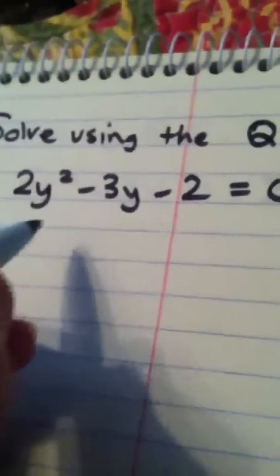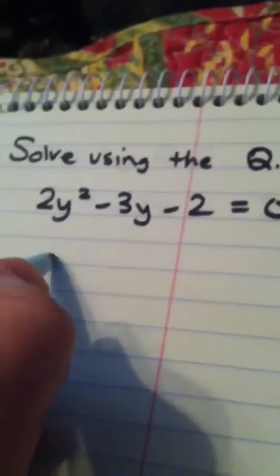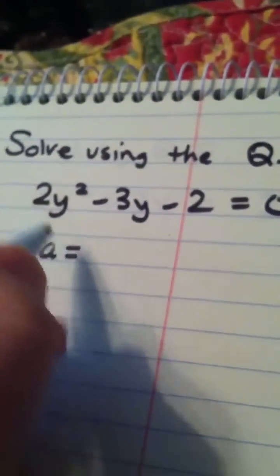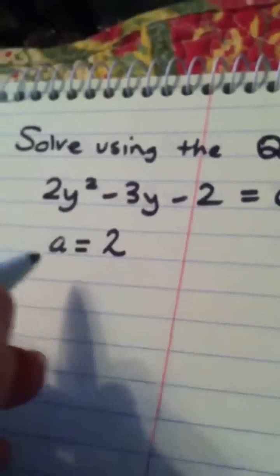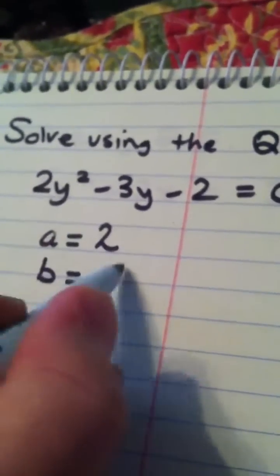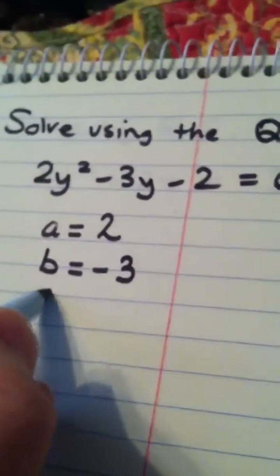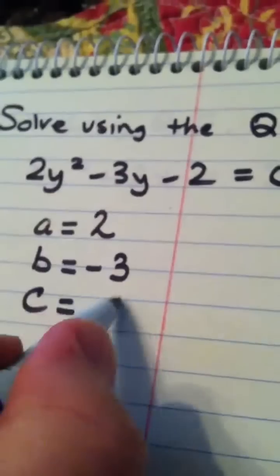Before I start the quadratic formula, I like to write down A, my leading coefficient is a 2, B, my middle coefficient is a negative 3, and C is my constant, which is a negative 2.